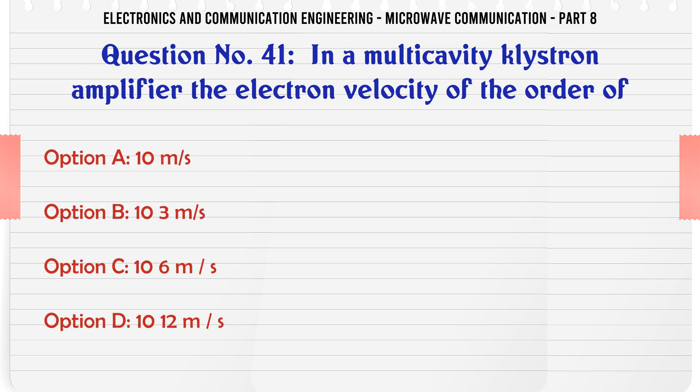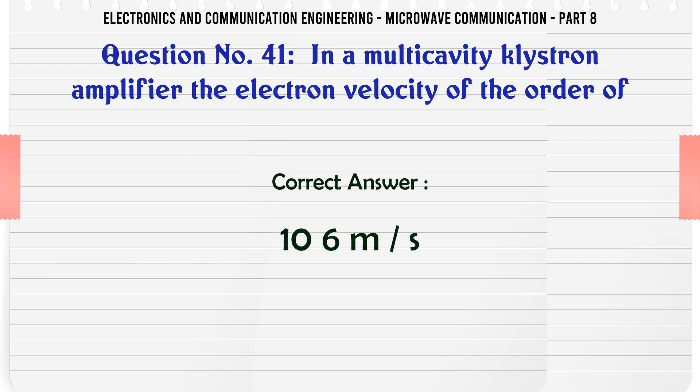In a multi-cavity klystron amplifier, the electron velocity is of the order of — A. 10 m/s, B. 10^3 m/s, C. 10^6 m/s, D. 10^12 m/s. The correct answer is 10^6 m/s.